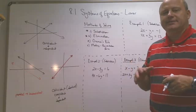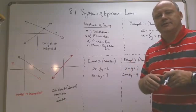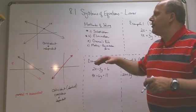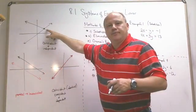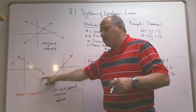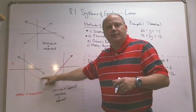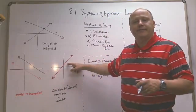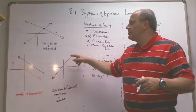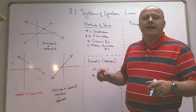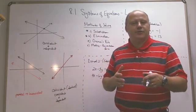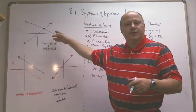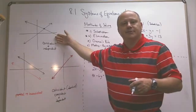There are three situations when you put two lines on the same Cartesian plane. They're either going to cross at a point, or they're not going to cross at all because they're parallel, or they're actually laying right on top of each other. Most of the ones you'll see are two lines that are separate and they cross at one point.